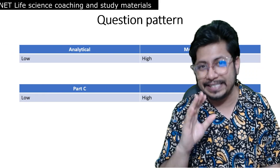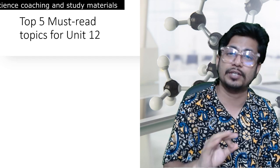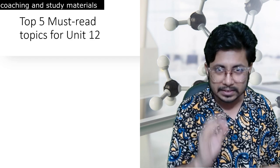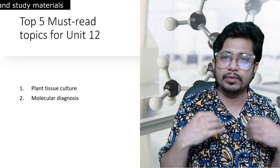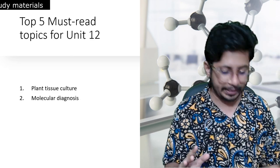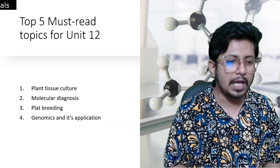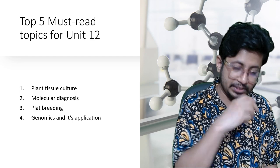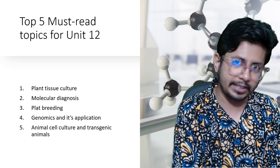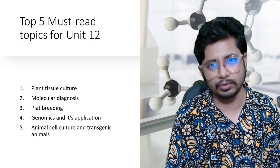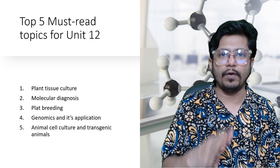Now the top five must-read topics from CSIR NET Life Science Unit 12 syllabus: first, plant tissue culture — very very important; second, molecular diagnostics including immunological techniques; third, plant breeding methods — marker-assisted selection and QTL mapping; fourth, genomics and its applications including gene therapy; and fifth, animal cell culture basics and transgenic animals. These are all five most important topics for Unit 12 preparation.